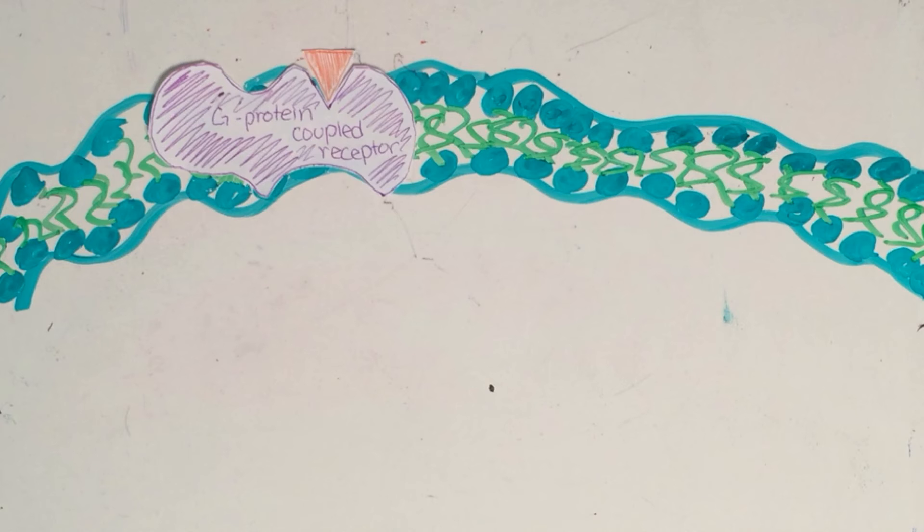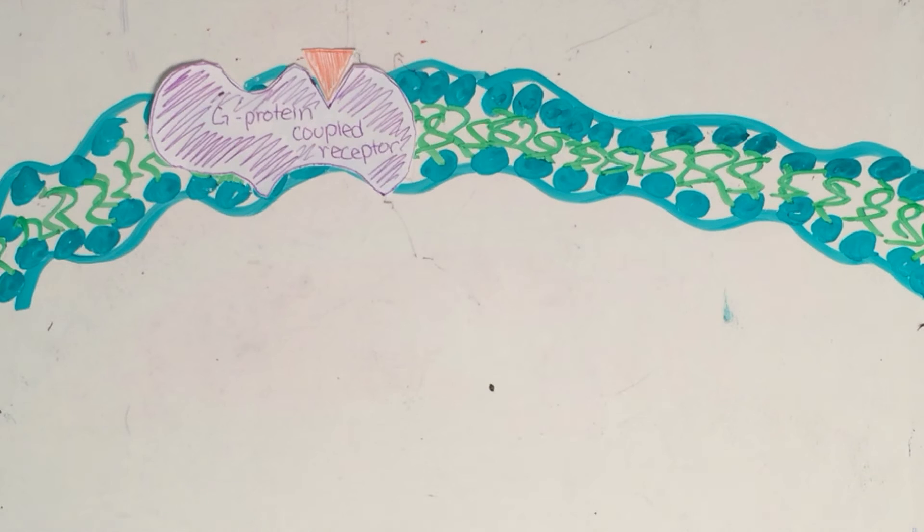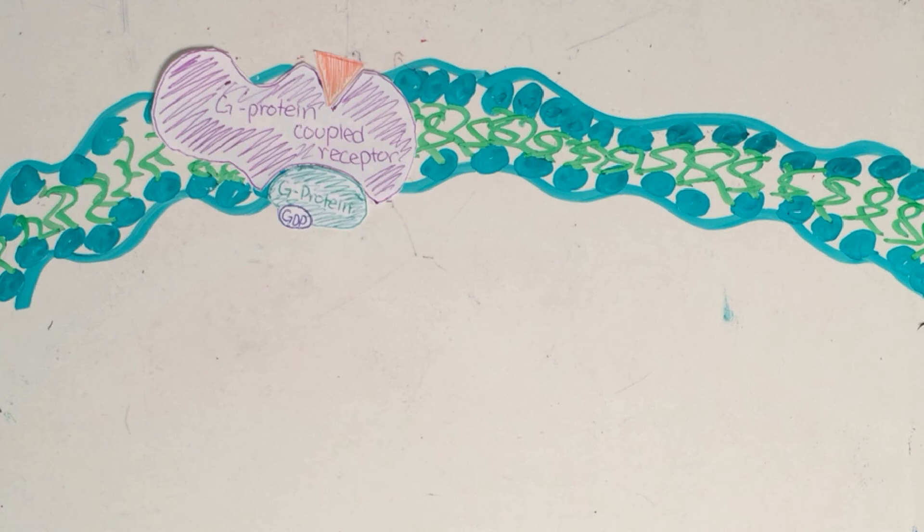The binding of epinephrine causes the G-protein coupled receptor to change shape. This allows an inactive G-protein to bind to it. This is the beginning of the transduction pathway.